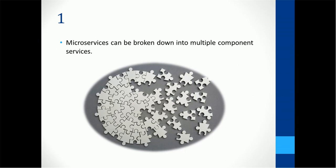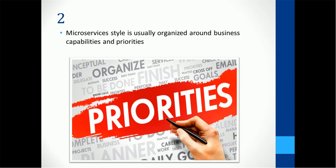The second characteristic is that microservices style is usually organized around business capabilities and priorities. If you think about the traditional monolithic development approach, different teams come together with their own focus — for example, a user interface development team, a database team, and a middleware team. Each team has their own focus, and they combine all three components at the end to build the enterprise application.